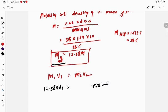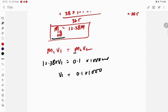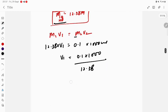Solve it student. V1 equals 0.1 into 1000 divided by 12.38, so it is going to be 100 divided by 12.38. How much is it coming?